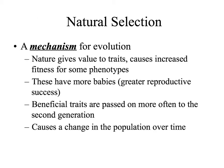In natural selection, nature gives value to certain traits. This causes an increase in fitness for certain phenotypes. The organisms that are more fit or better adapted to their environment will have more babies or greater reproductive success. This means that those beneficial traits will be passed on more often to the next generation, and over enough generations this can cause a change in the population over time.